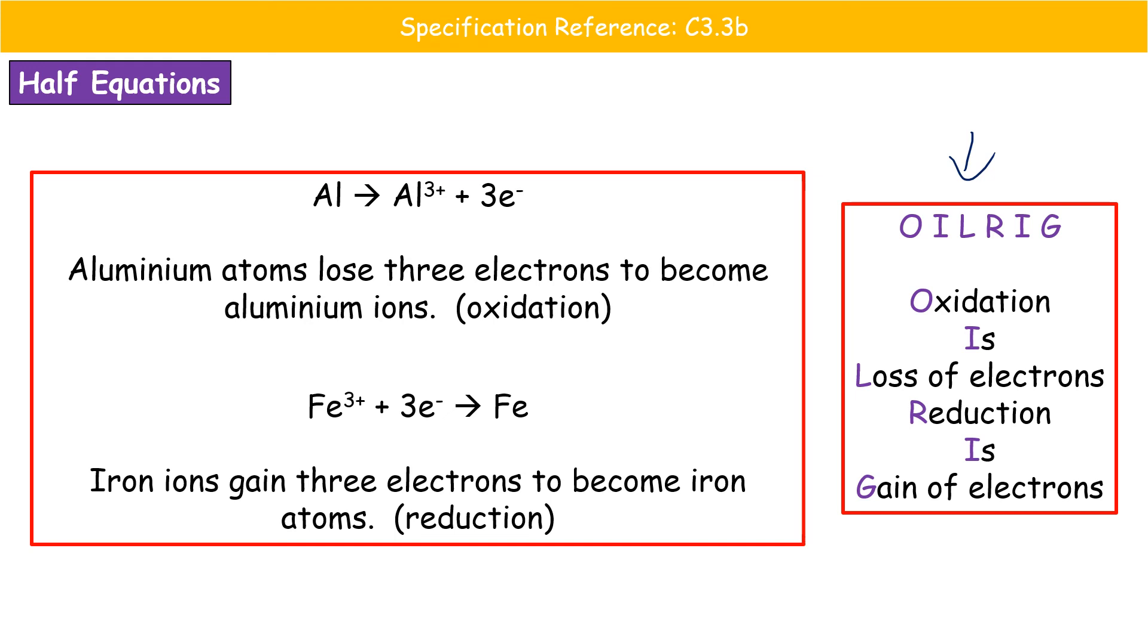So let's have a look at our examples that we've just written down. So we start off with our aluminium. So we start off with aluminium atoms and then they are going to lose three electrons to become aluminium ions. So oxidation is the loss of electrons. Therefore, we have an oxidation reaction.